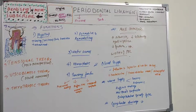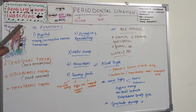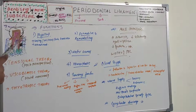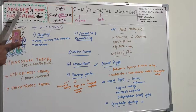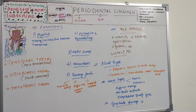Many investigators found the tensional theory insufficient. The viscoelastic theory states that when a force is applied to the tooth, there is a change in extracellular fluid — fluid from the periodontal ligament escapes to the marrow spaces because the tooth is compressed. This leads to depletion of fluid, and the fibers absorb the pressure and become tightened.